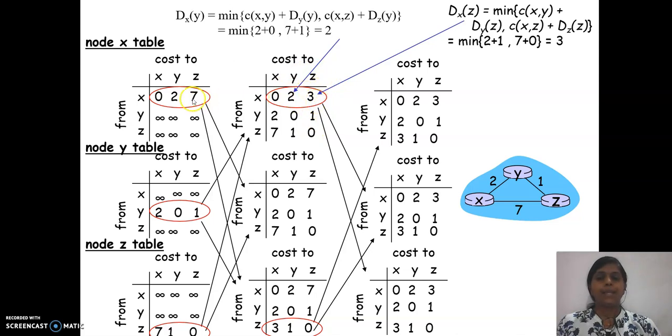The most important thing here to be observed is this value. See, earlier we were knowing x to z direct value, that is 7. But later on, after receiving the values, that is the table of y, y to z is 1, and x to y is 2. So 2 plus 1 is 3. Of course, the 3 value is less than 7.